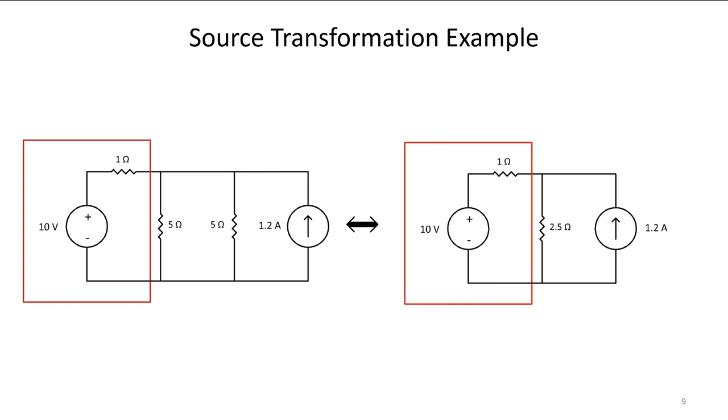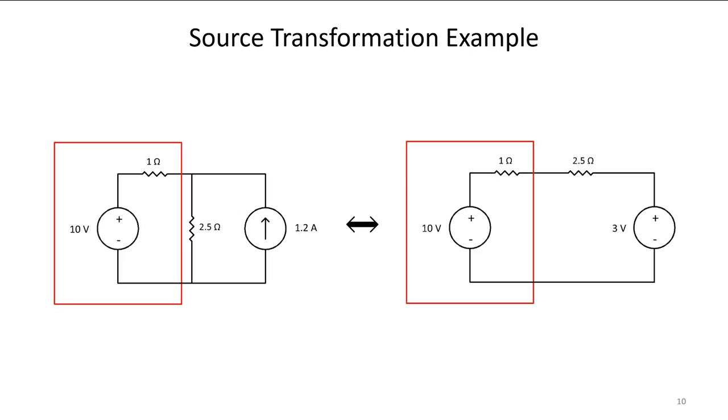Now again I have a current source and resistor in parallel so I can transform this. V equals IR, so 1.2 times 2.5 is going to be three volts and then my two and a half ohms goes up top. Now I can't do any more source transformations without getting into the red box, so I'll just stop here and then I'll solve.